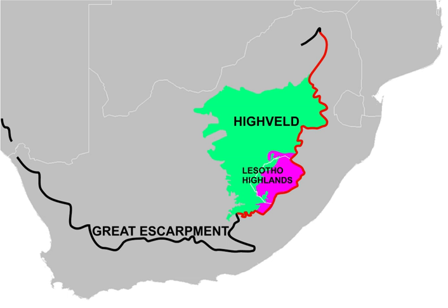About half of the gold ever produced in the world has been mined on the Highveld since 1880. The largest deposits are located in the Witwatersrand, which centers on Johannesburg, with smaller deposits in the northern Free State near Welkom and Virginia. The Highveld is also exceedingly rich in diamonds, coal, vanadium, and manganese.